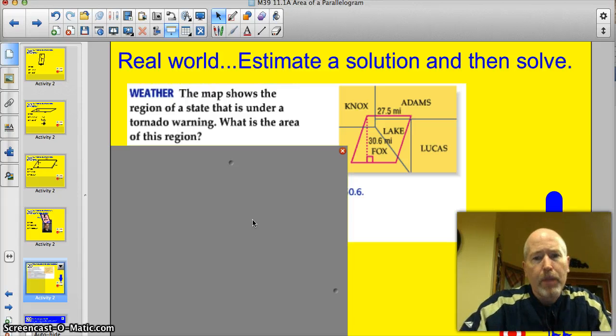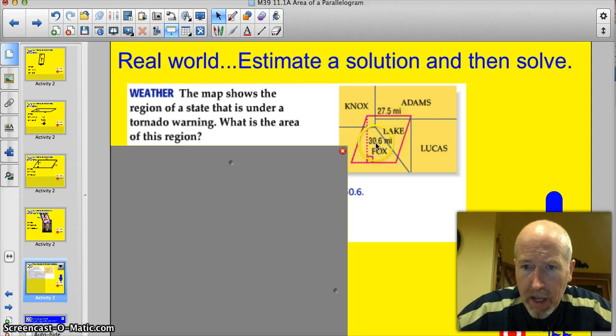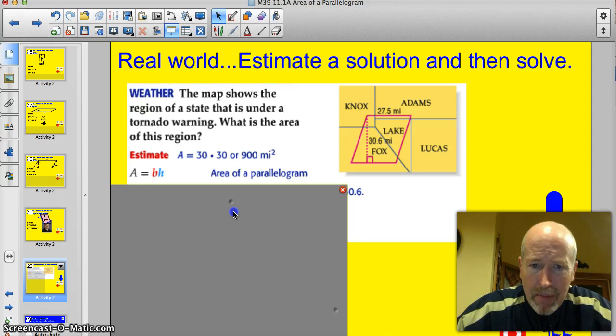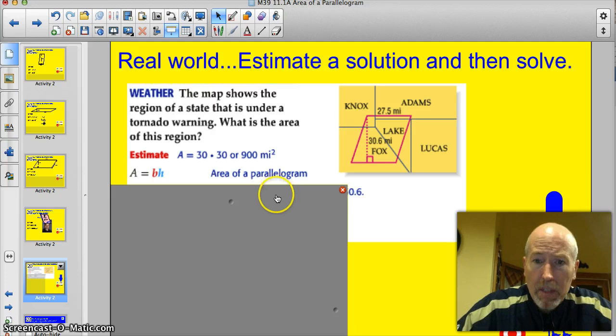All right. Here's a real world example. I'd like you to estimate a solution and then solve this one. So go ahead and read it and go for it. All right. Let's see how you did here. Map shows a region of a state that is under a tornado warning. What is the area of this region? Well, 27.5 and the height of that parallelogram is 30.6. So it's about 20. Let's estimate this as about 30 times 30 because this is so close. So we got about 30 times 30. 3 times 3 is 9. Two zeros. You got 900 miles squared. Let's find the exact area.